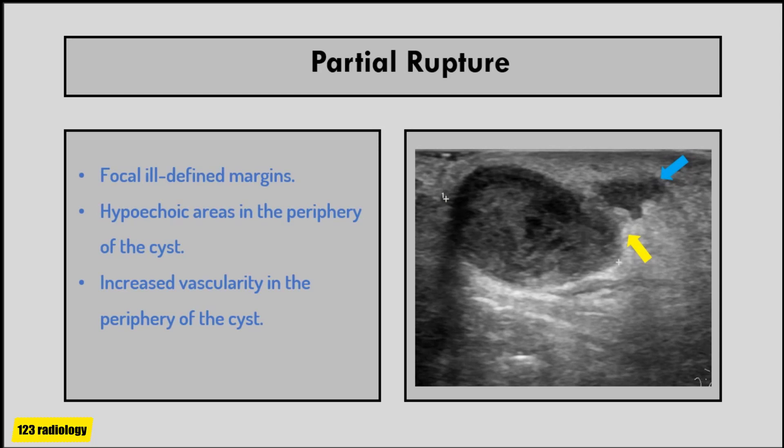If rupture occurs, keratin spreads into the surrounding tissue, leading to reactive inflammation which causes a surrounding hypoechoic fluid collection. In partial rupture, there will be focal disruption of the cyst wall. The yellow arrow points to the focal wall disruption and the blue arrow points to the leaked hypoechoic content outside the cyst.